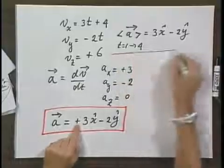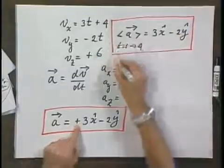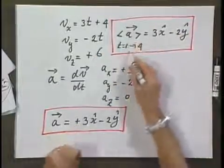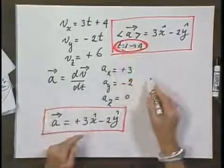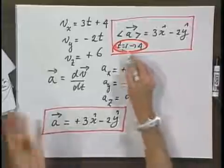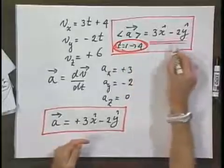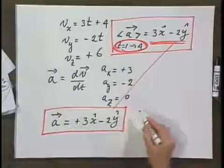And so you see that the instantaneous acceleration is independent of time, so the acceleration is constant. It doesn't change in time. And so it shouldn't surprise you that when you calculate the time-averaged acceleration between any two points in time, any two that you can choose, that you find exactly the same result.